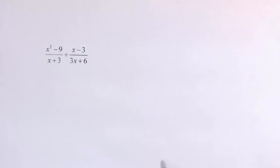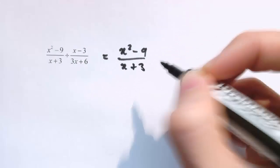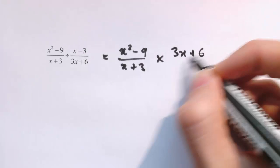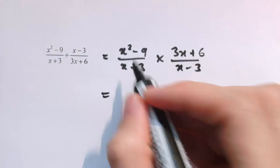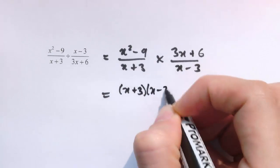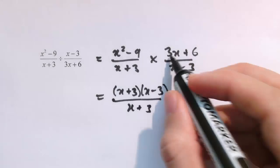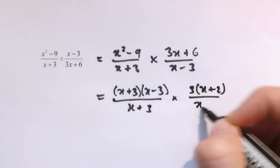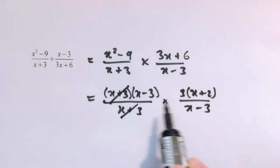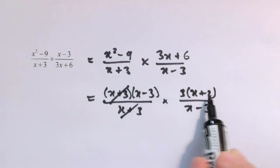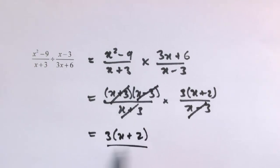Now for harder ones. This division is the same as (x²−9) over (x+3) — turning the second one upside down and multiplying. Factorizing, x²−9 is (x+3)(x−3), the difference of two squares. Divided by (x+3), then multiplied by 3(x+2)/(x−3). The factor of (x+3) cancels in that fraction, and then (x−3) cancels as well, leaving 3(x+2).